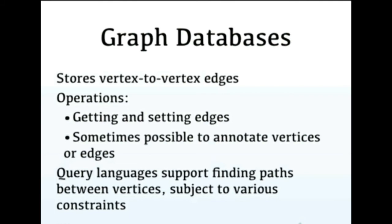The second type is Graph databases, which represent data as a network. Data is stored as nodes, and nodes are connected to other nodes. Connections between nodes are called edges. Graph databases use query languages to traverse paths within the network.